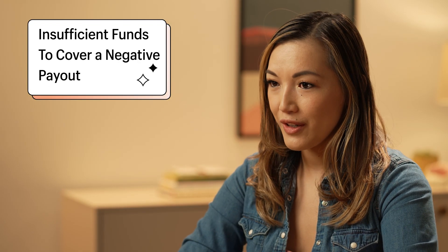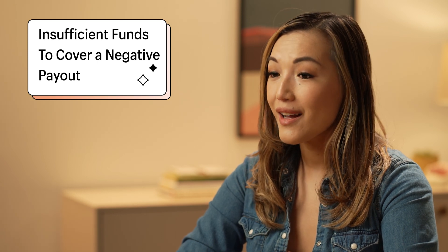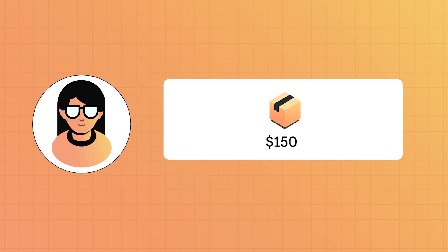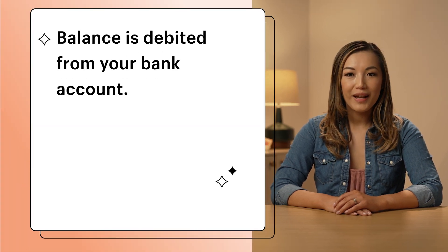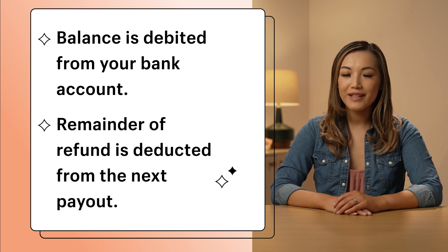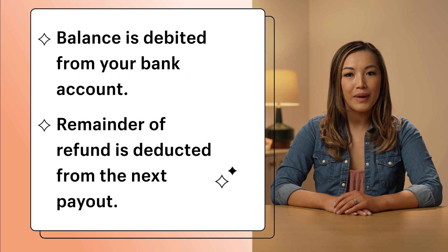Last but not least, you might not have enough funds to cover a negative payout. A negative payout can occur when you have to refund an order but don't have enough funds in your Shopify Payouts balance to cover it. For example, if your customer Priya requests a refund on her order that cost $150 but you only have $100 in your payouts balance, you'll be able to refund Priya her full amount, but you'll have negative $50 in your account. This negative $50 will show up as a failed payout. If this happens, there are two different outcomes depending on where you live: either the balance is debited from your bank account on the day of the payout, or the remainder of the refund is deducted from the next payout until the refunded amount is covered. Once the full refund amount is covered, you'll receive your money.